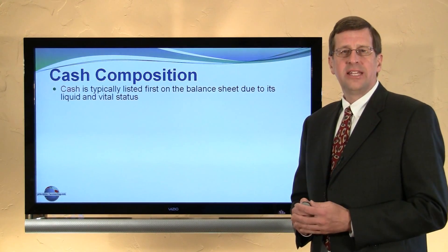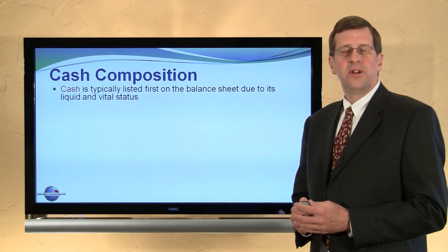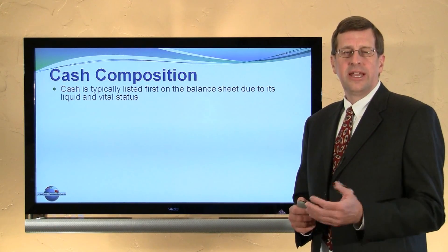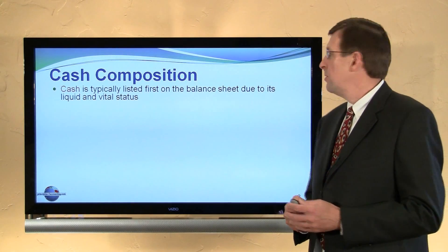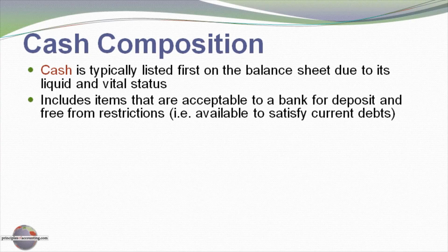First, recognize that cash is typically listed first on the balance sheet due to its liquid nature and its vital status to the organization. Cash includes items that are acceptable to a bank for deposit and free from restriction — that is, they are available to satisfy current debts.